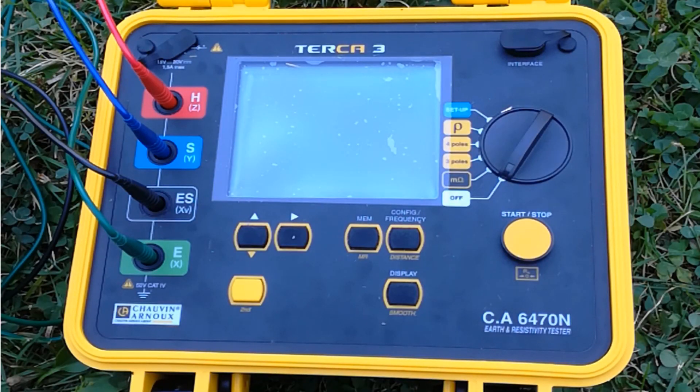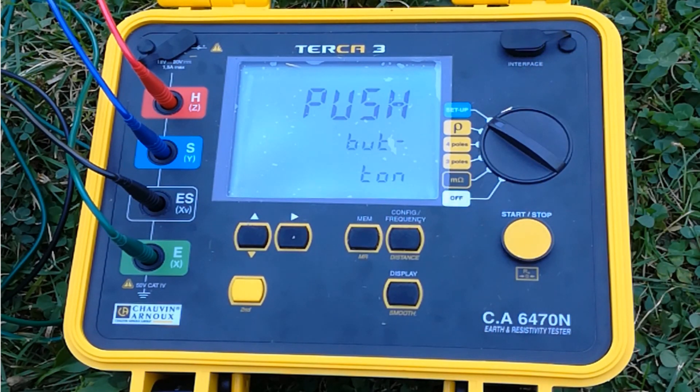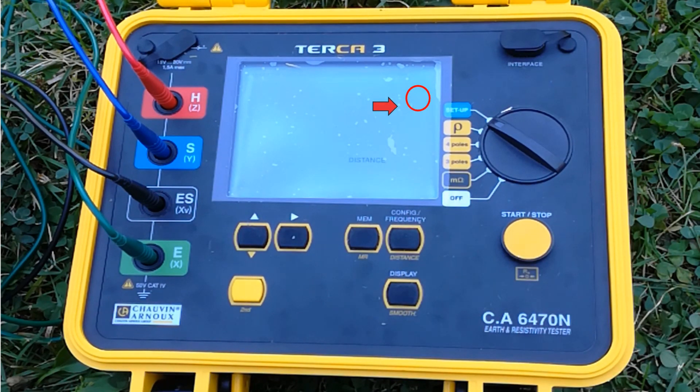Now, turn the instrument dial to setup setting. We start configured for the correct units of measure. Then, press display button. The unit of measure appears blinking on the screen.